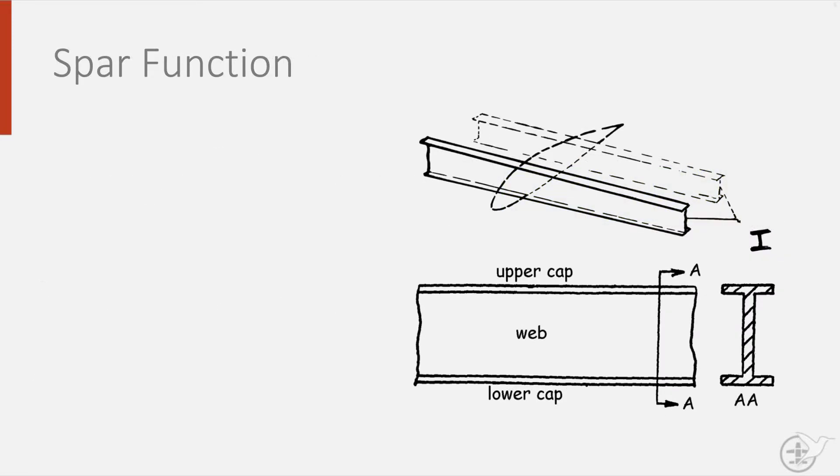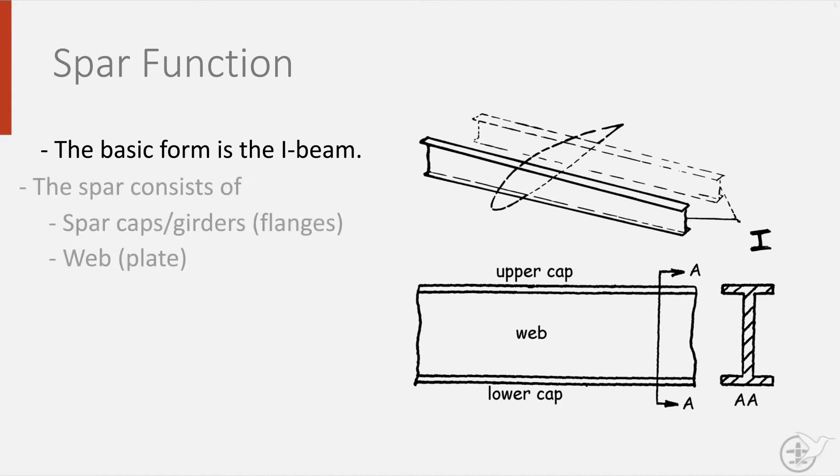A spar has an I-shaped cross section of some sort, with a web perpendicular to the wing skin and flanges parallel and attached to the skin.